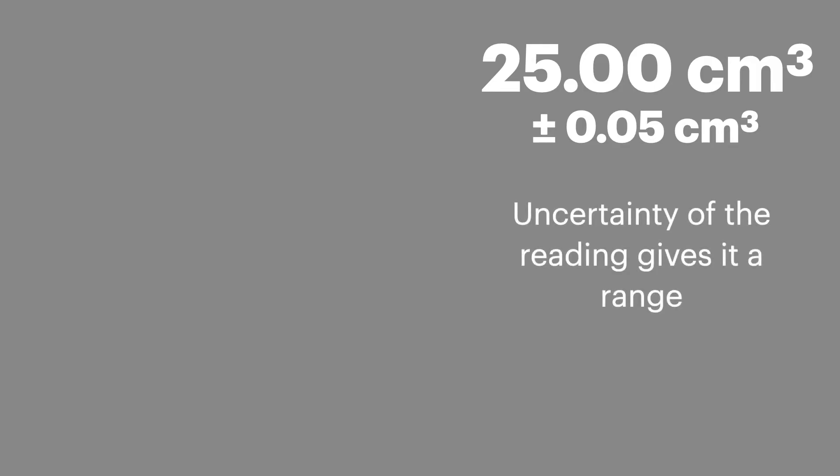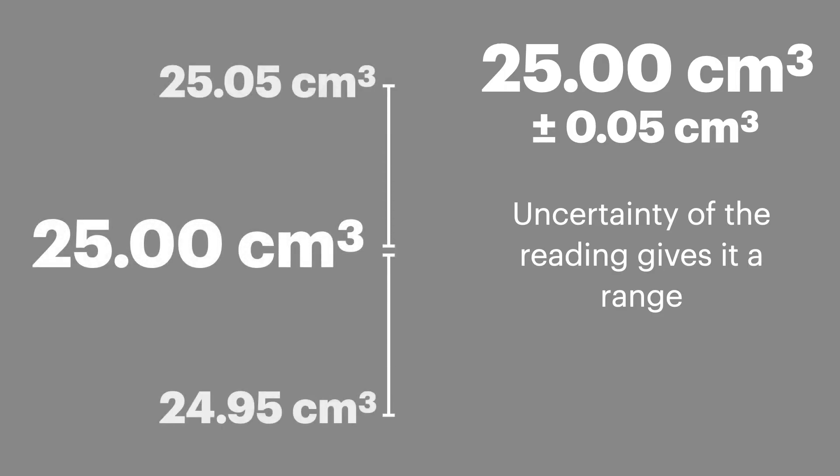So if a value is given as 25 cm³ plus or minus 0.05, what does that actually mean? Well, this gives us a range that the actual measurement will fall. So in this case, it will be somewhere between 24.95 and 25.05.